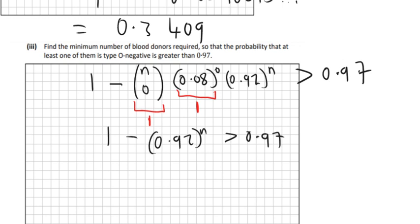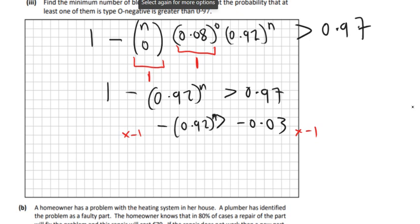If you move the 1 over to the other side, it becomes minus 1. So we end up getting minus 0.03 on one side, and minus 0.92 to the power of N on the other. We're going to multiply across by minus 1 just to turn them both into positives. So be careful — remember the rules of inequalities: when you multiply across by minus 1, you must change the sign. So it's going to be 0.92 to the power of N is less than 0.03.